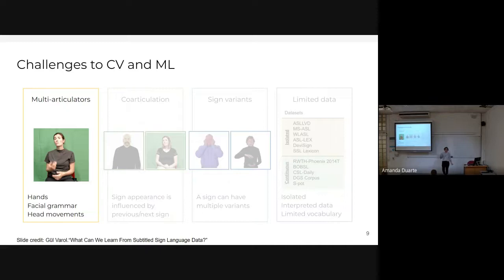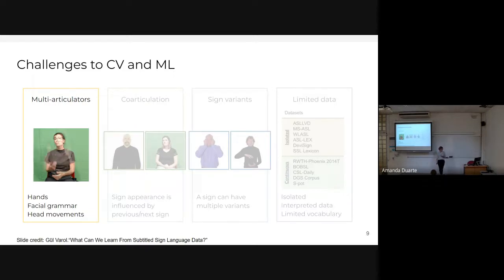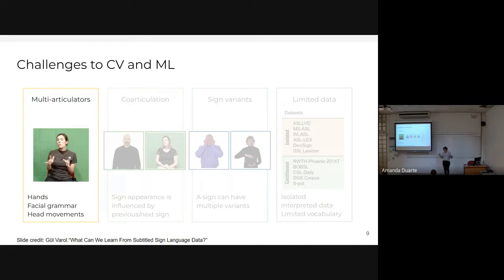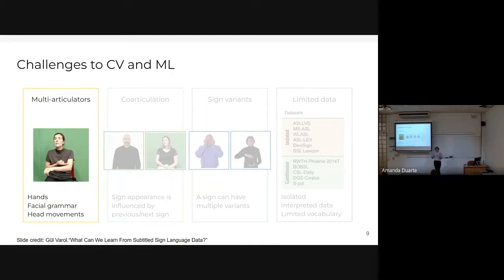Sign language brings significant challenges to computer vision and machine learning. Sign language uses multiple features or articulators to convey information — hands, face expressions, and body movements. When we work with sign language it's very important to take into account all these features to have a complete understanding of what the person is saying.